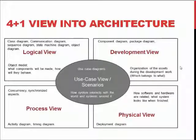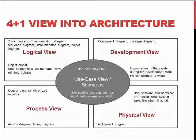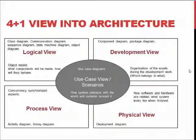If we want to consider architecture in a more refined sense, we go back to the 4+1 view of software architecture, where we have different views on how the system behaves, what components we are expected to build, where everything is stored during development, how the entire system will look, and how the software components relate to real-world activities. Basically: the logical view, the development view, the process view, and the physical view — combined with the use case view, which gives an idea of how the system interacts with people.